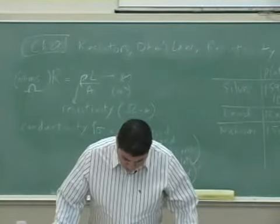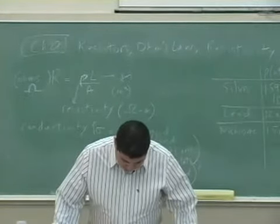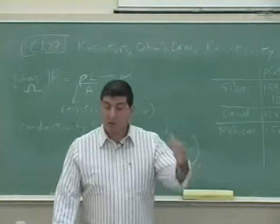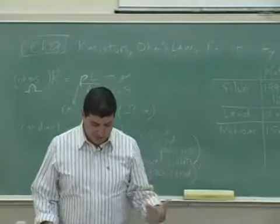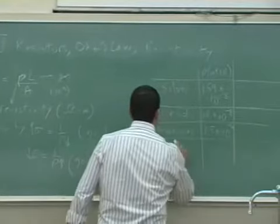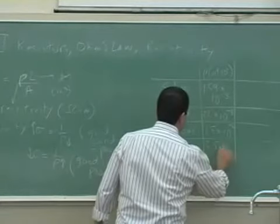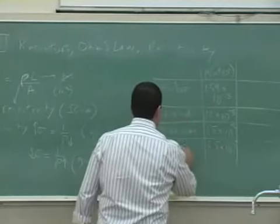So notice now this is a hundredfold bigger than any of the other metals. Carbon 3.5 times 10 to the negative 5. Now they're getting, the numbers are getting bigger.